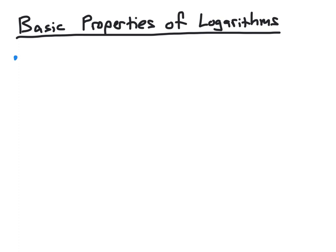One basic property says that log base b of 1 will always equal 0. This is true for any base b, including base 10 or base e for the common and natural log. If we convert this statement to exponential form, we see that this is the same as saying b to the 0 power equals 1, which we know is true. Therefore, the corresponding logarithmic property, log base b of 1 equals 0, is also true for any base b.